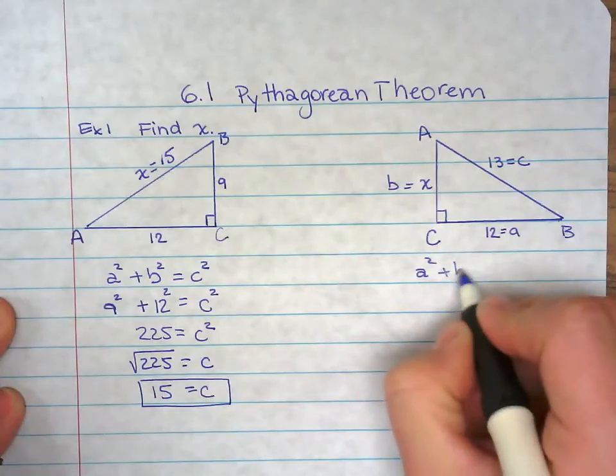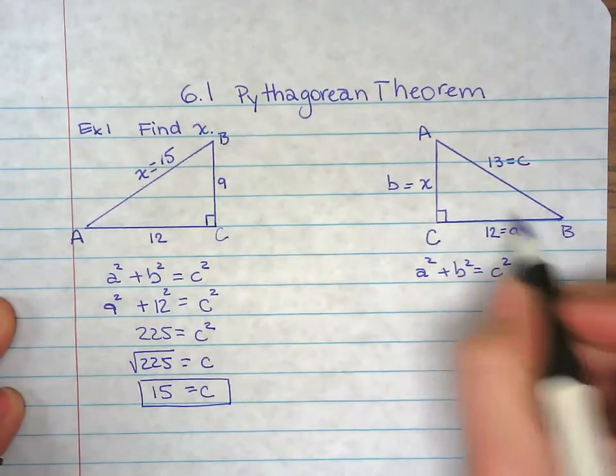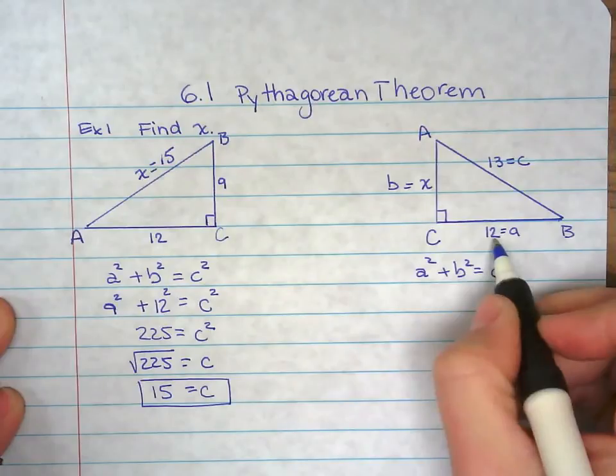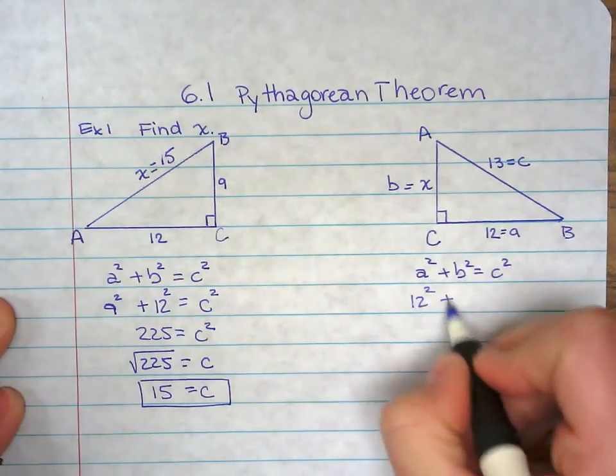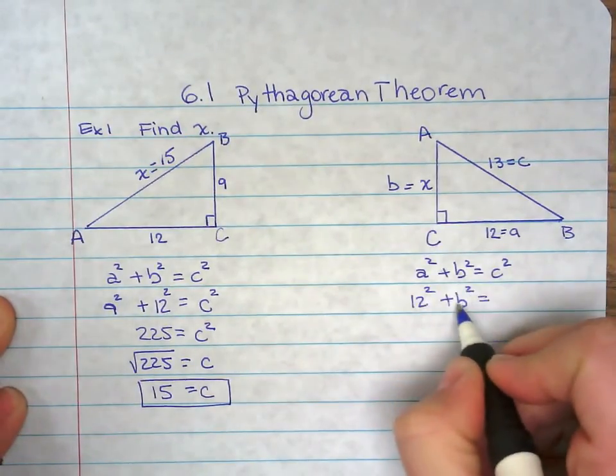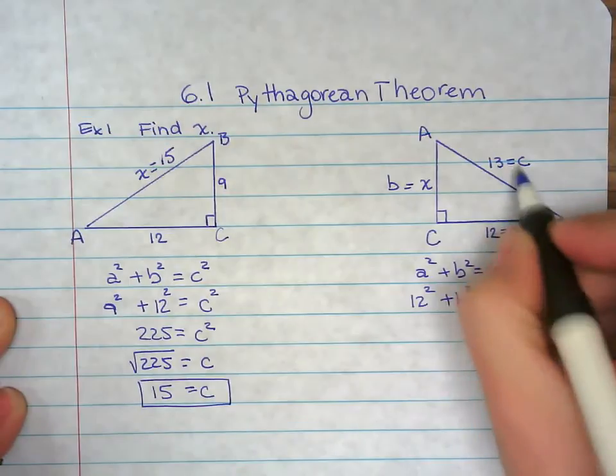a² + b² = c². So a is right here, 12, plus b², that's what we're looking for. c² right here is 13, 13².